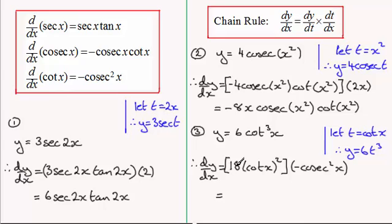And we get minus 18. So minus 18. And then we've got cot x all squared which would look better written as cot squared x. And then you've got cosec squared x. And that's that one.